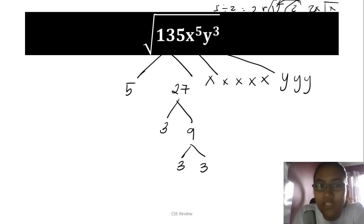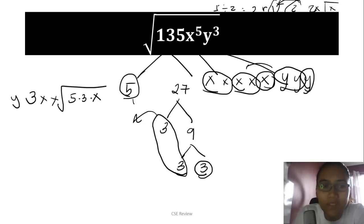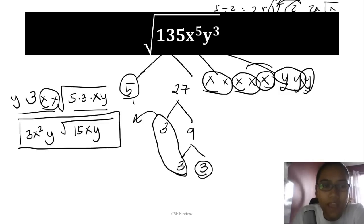For a visual approach, or if you're confused, here's an option. On the digit side, 5 has no pair, so it stays. The 3 has a pair but one extra. That means a pair of 3's comes out. The 5 and one 3 stay: 5 times 3. With the x's, you have one pair that can come out, leaving one x inside. With y, two can come out as one y, leaving one y inside. Multiply everything outside and inside: 3x²y√(15xy). That's your answer. I hope you got it right.